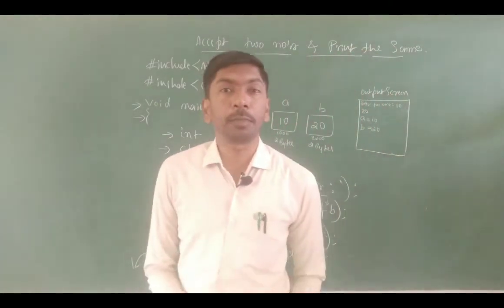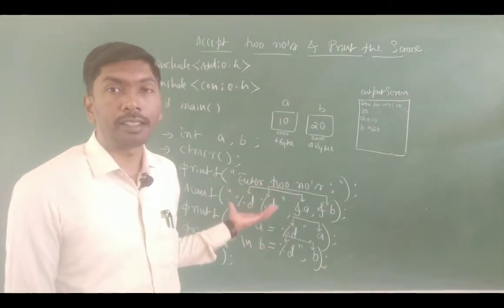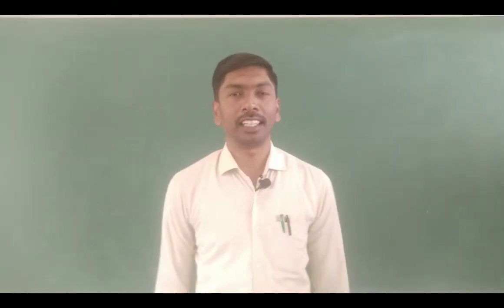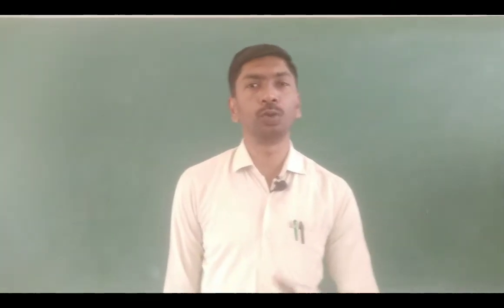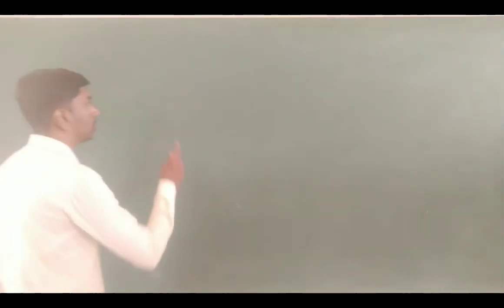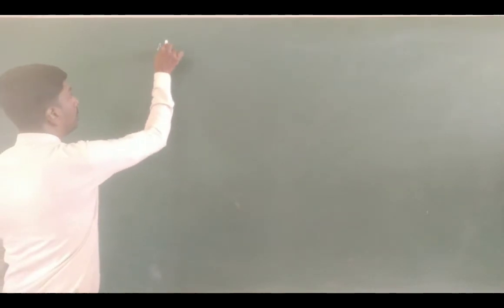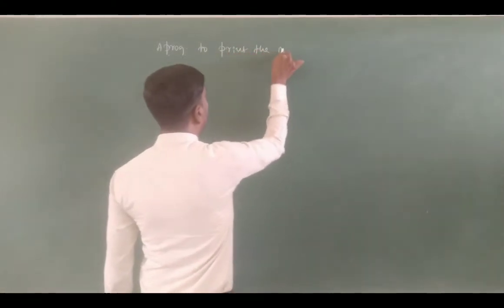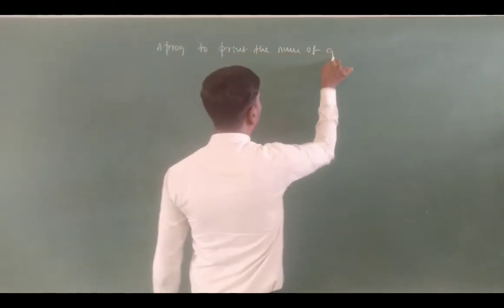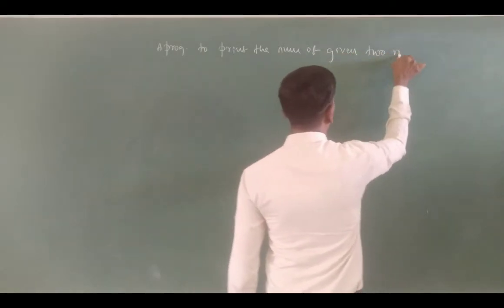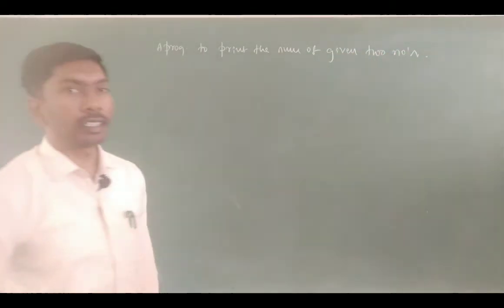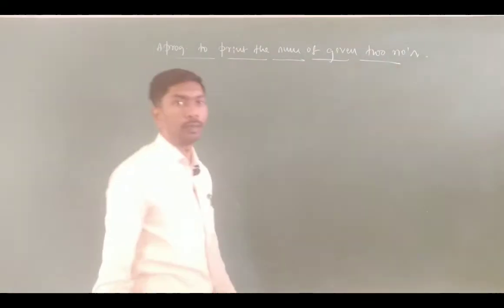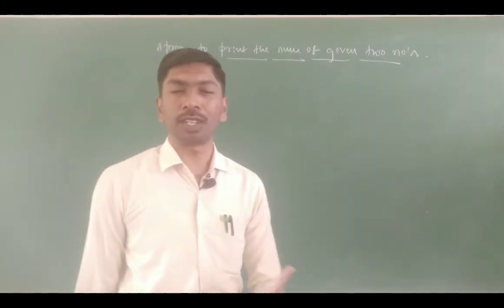This is the simple program — we can execute the tracing. Now let us see another program: sum of two numbers. A program to print the sum of given two numbers — you can accept the numbers and print the addition of two numbers.